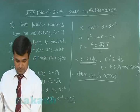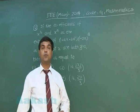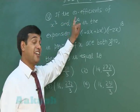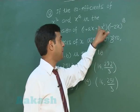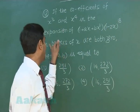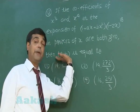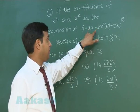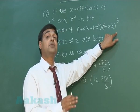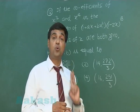Let us move to question number 12. If the coefficients of x cube and x 4 in the expansion of 1 plus ax plus bx square multiplied with 1 minus 2x whole to the power 18 in powers of x are both 0, then find the ordered pair a comma b. When we expand it, the coefficient of x cube is 0 and the coefficient of x 4 is also 0. We will get two equations in two unknowns a and b.